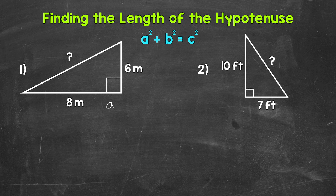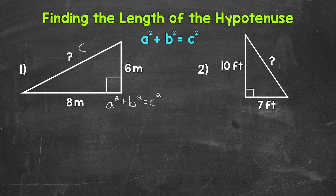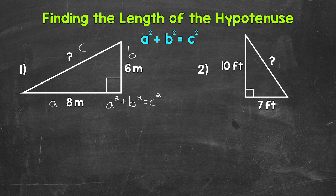So let's use a squared plus b squared equals c squared in order to find the length of the hypotenuse. Now, c is always the hypotenuse, so this is c, and then the legs are a and b. Let's make this a and this b. Keep in mind, it does not matter which leg is a and which leg is b. Now we can plug in the side lengths that we are given and work through the equation in order to find the length of the hypotenuse.